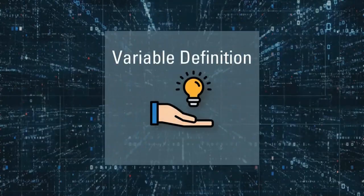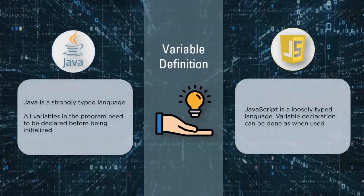Moving on to the third parameter — variable definition. Java is a strongly typed language. All the variables in the program need to be declared before they're initialized or defined. But in the case of JavaScript, it is a loosely typed language, and variable declaration can be done as and when they are used.